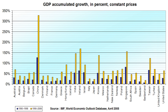An increase in economic growth caused by more efficient use of inputs — increased productivity of labor, physical capital, energy or materials — is referred to as intensive growth. GDP growth caused only by increases in the amount of inputs available for use, such as increased population or new territory, is called extensive growth. Development of new goods and services also creates economic growth.